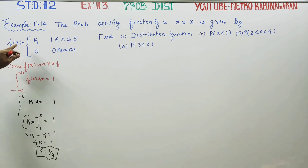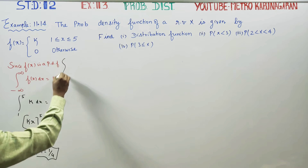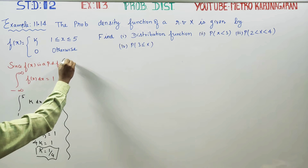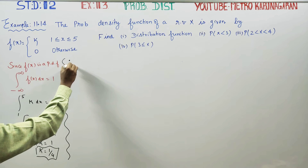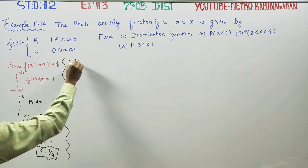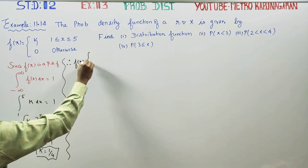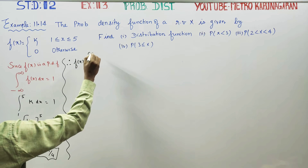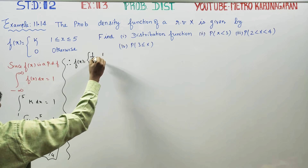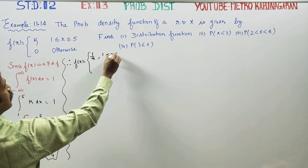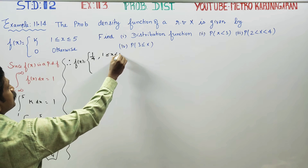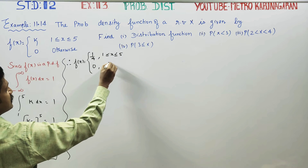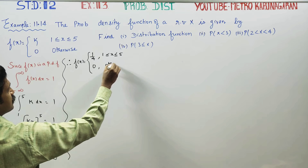With k equal to 1 by 4, we redefine the function. Therefore, f of x equals 1 by 4, where x is between 1 and 5, and 0 otherwise.